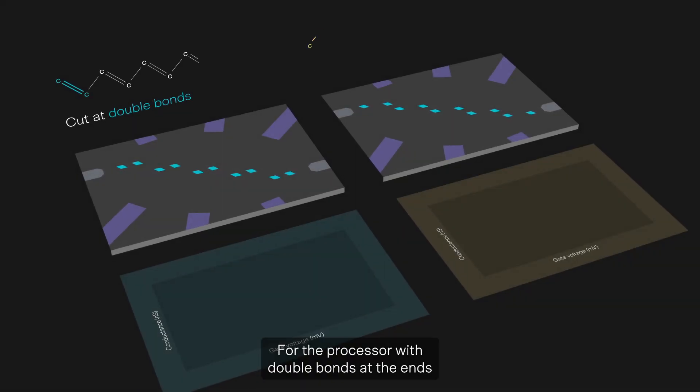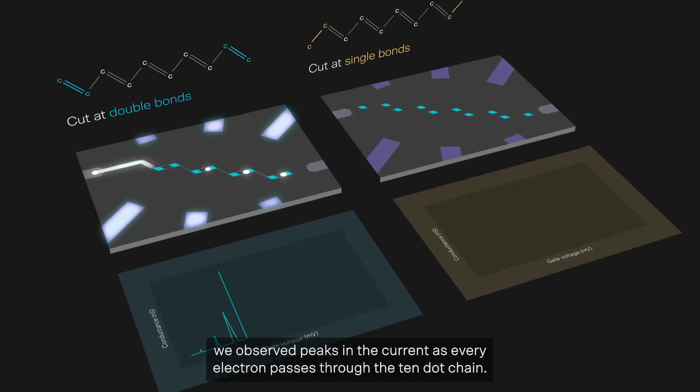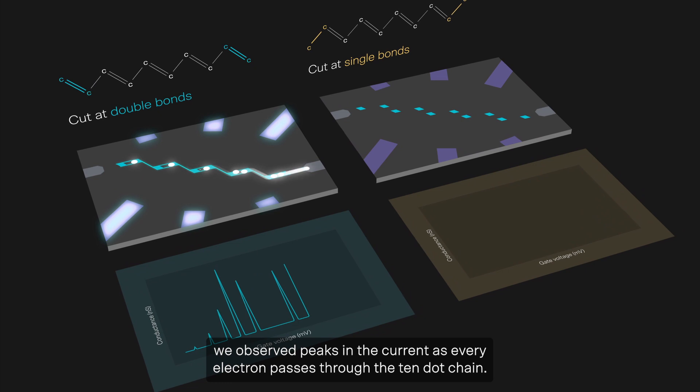For the processor with double bonds at the ends, we observe peaks in the current as every electron passes through the 10-dot chain.